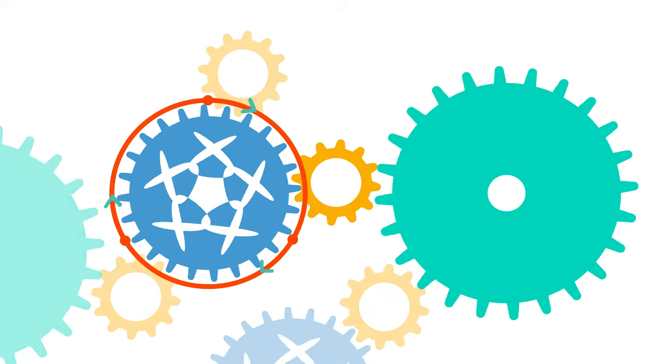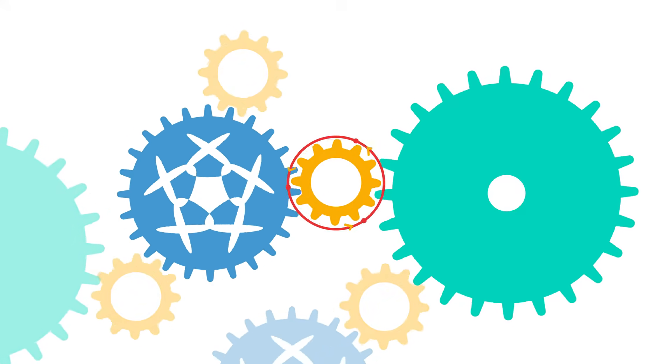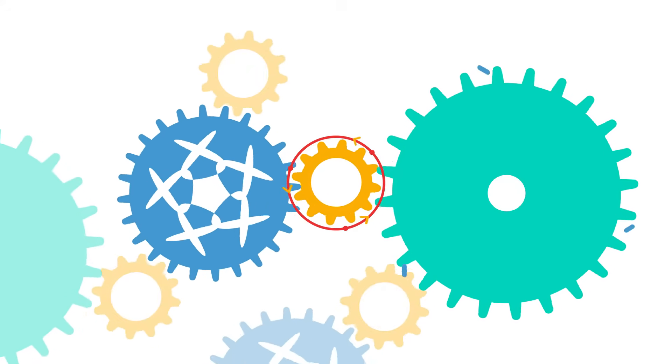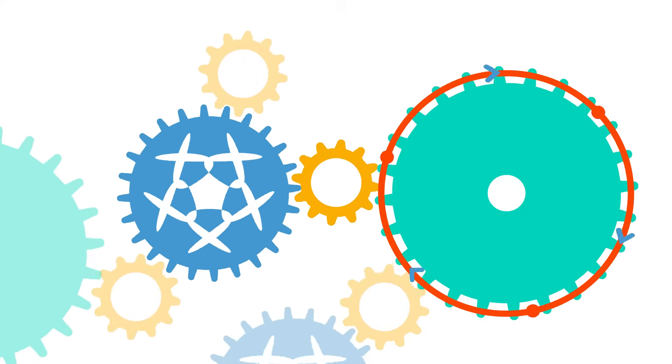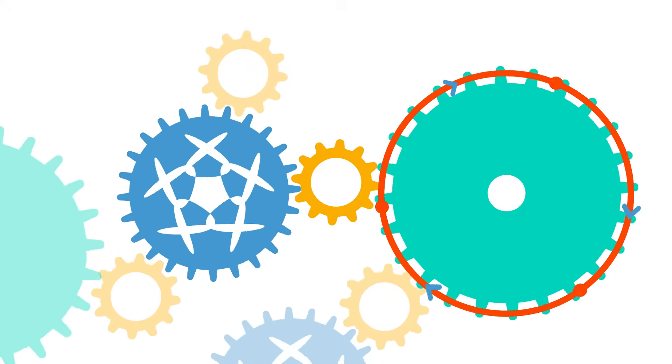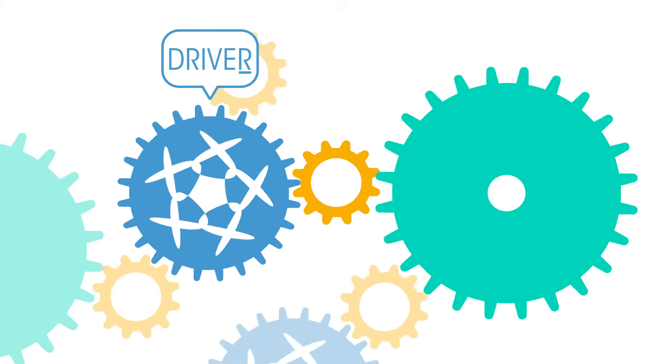If the first gear turns clockwise, then the second anti-clockwise and the third clockwise again. The original gear is called the driver and the other gears are said to be driven.